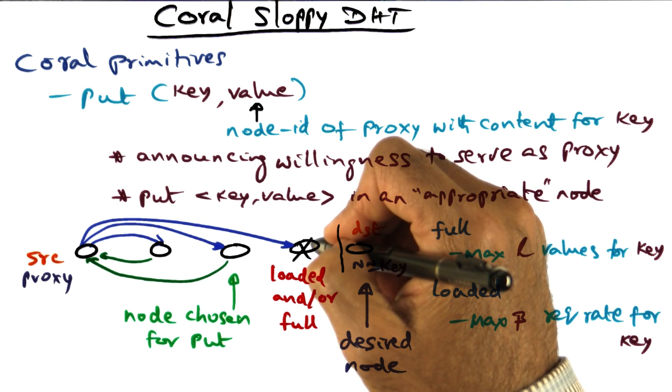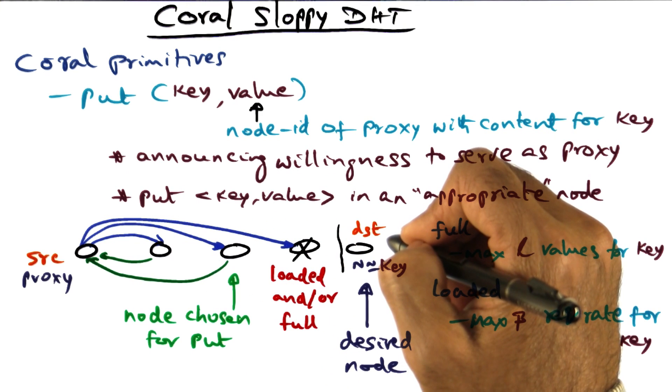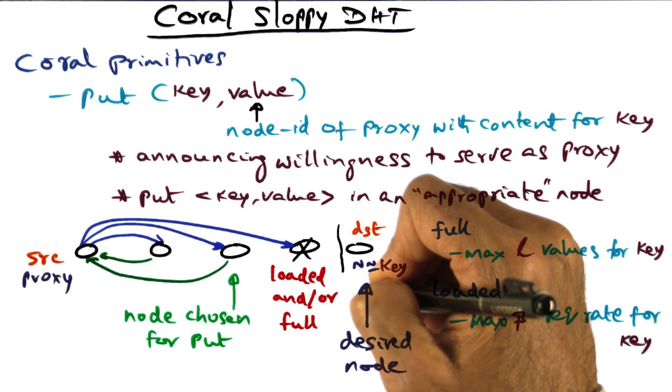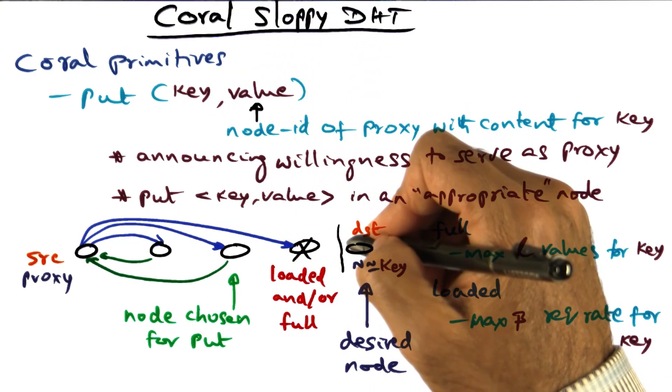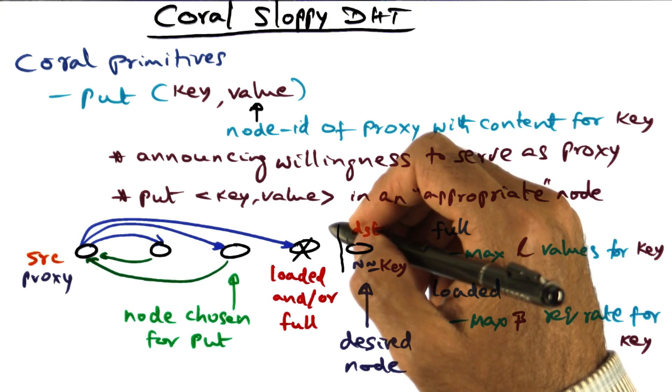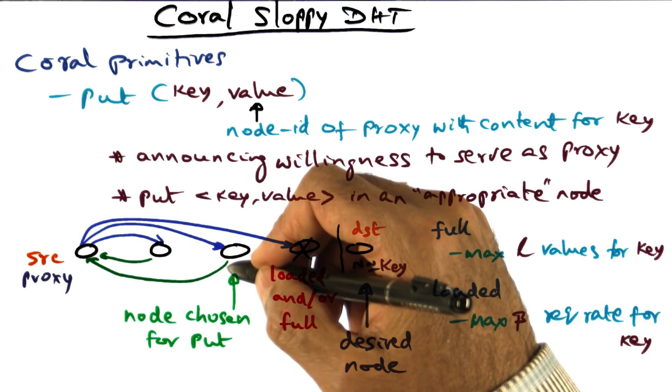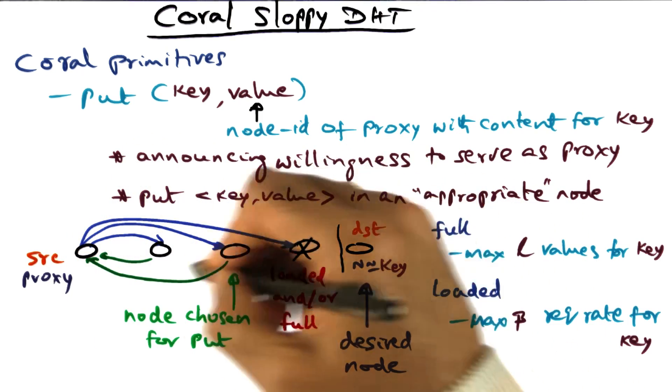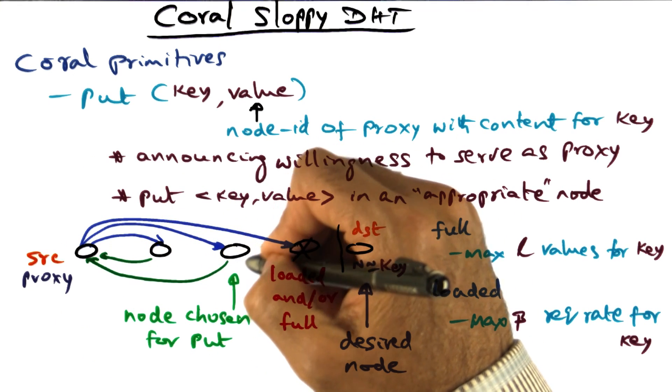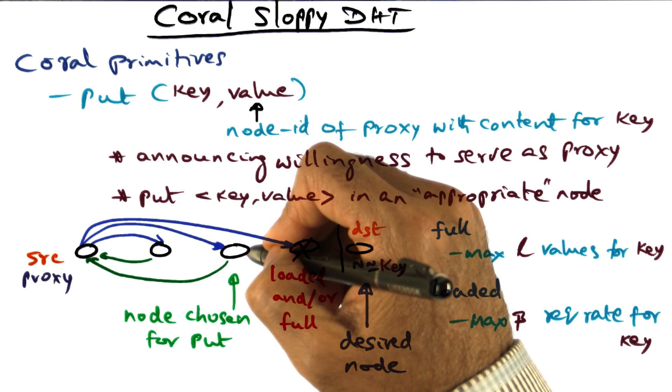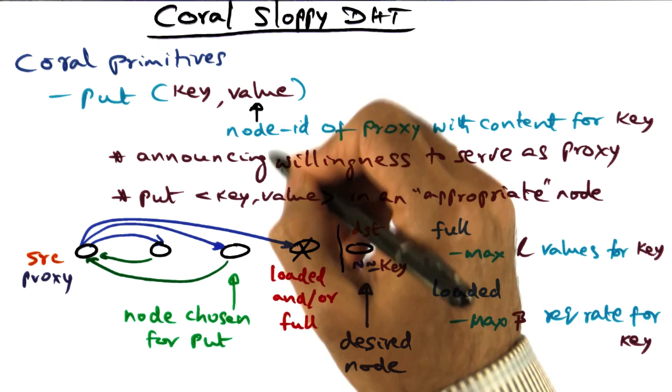At that point, you know you don't want to go any further towards the desired destination because all of these guys are either loaded or full dealing with this particular key. And therefore, the second phase of the algorithm that I'm going to use is retract my steps and go back and ensure that this guy is still willing to host my key-value pair.